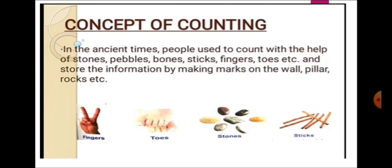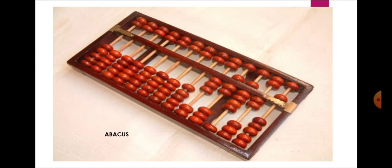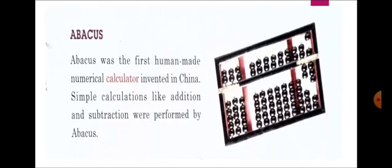So this is the abacus. It is made up of beads and rods. Let's learn about it. Abacus was the first human-made numerical calculator invented in China.